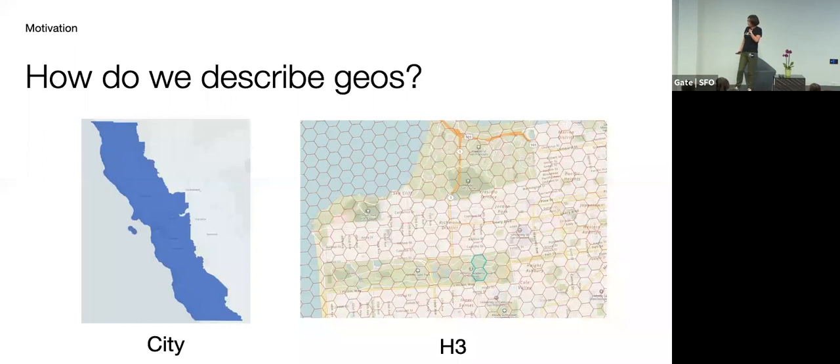So let's start with how do we describe geos at Uber. There are two things here. So one on the left, what you will see is what we call a city. But the Uber city is kind of different from the city in your perception. So for instance, what's shown here is the city of San Francisco in the Uber definition. But the actual San Francisco Bay Area is like this little tiny tenth of the city.